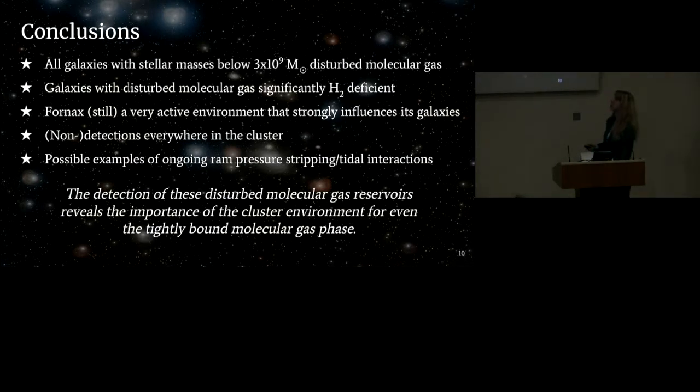So that's it from my side. I'll leave you with my conclusions. So we basically found that in our survey of the Fornax cluster, all galaxies with masses below three times 10 to the nine stellar masses show disturbed molecular gas. Galaxies in the Fornax cluster, and especially the ones with disturbed molecular gas, show molecular gas deficiencies, which basically means that Fornax is still a very active environment that strongly influences the molecular gas in its galaxies. We found both detections and non-detections and disturbed and non-disturbed molecular gas all over the cluster. And we see some examples of possibly ongoing ram pressure stripping in the cluster as well. Thank you very much.